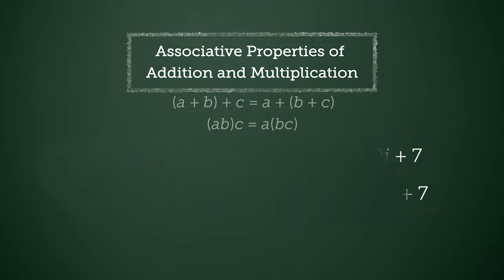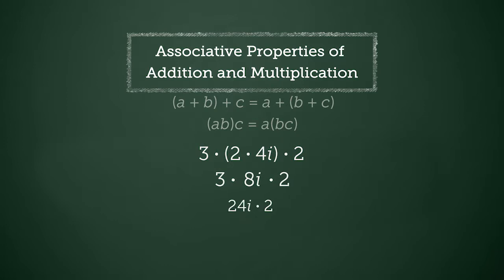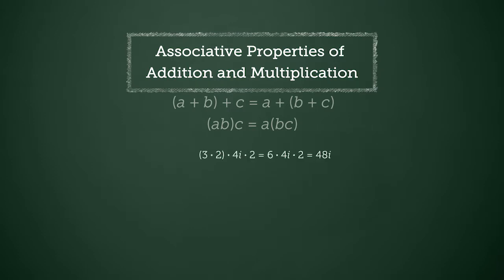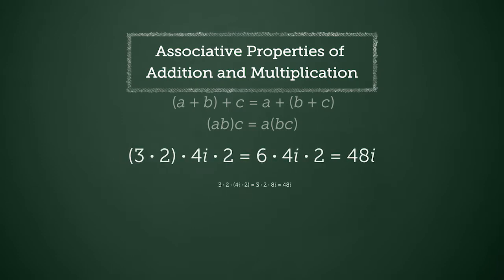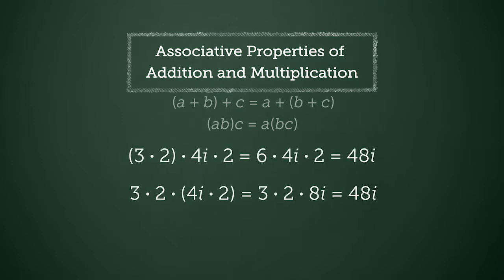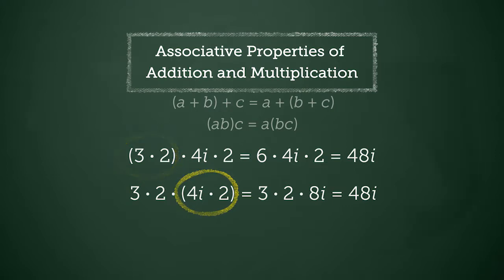The same is true of multiplication. Different groupings of the same factors will yield the same product — it does not matter what is multiplied first. For example, placing 2 and 4i in parentheses gives a solution of 48i. If you change the numbers within the parentheses, you still get the same solution of 48i.